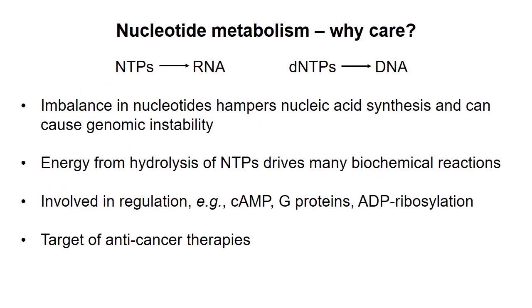Before we get to that, I want to explain why nucleotide metabolism is important. Obviously we need nucleoside triphosphates to make RNA and deoxynucleoside triphosphates to make DNA. An imbalance in the levels of the different nucleotides interferes with RNA and DNA synthesis. Nucleoside triphosphates, most notably ATP, are used as a source of energy to drive many enzymatic reactions forward. Nucleotides are also used for signaling and regulation, and we'll see examples of this when we get to DNA replication.